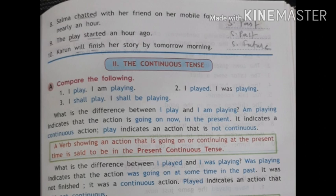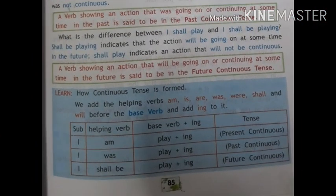What is the difference between 'I played' and 'I was playing'? 'Was playing' indicates the action was going on at some time in the past — the action was in process but not finished, it was continuous. -ED shows it happened, but -ING shows the action was in progress. A verb showing an action going on or continuing at some time in the past is said to be in the past continuous tense.